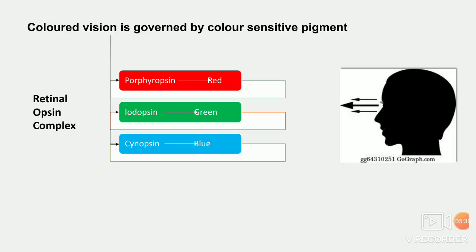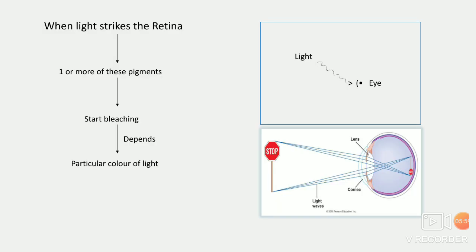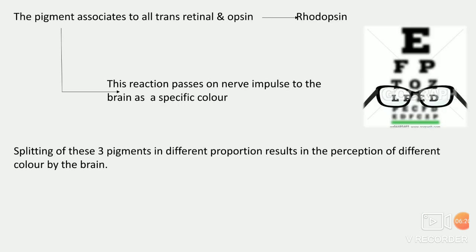अब देखेंगे colored vision क्या है. Colored vision is governed by color-sensitive pigments. Retinal opsin complex में तीन pigments हैं जो important हैं: porphyropsin — यह red color pigment, iodopsin — यह green color pigment, और cyanopsin — यह blue color pigment. When light strikes the eye, one or more of these pigments start bleaching — जो bleaching process हमने देखा था — and it depends on the particular color of light.